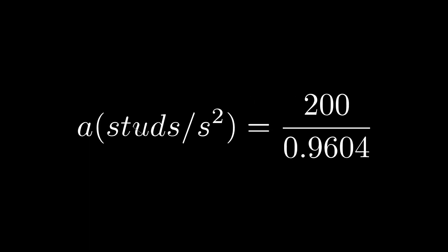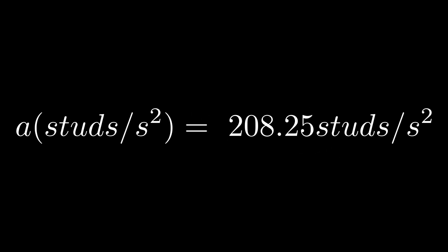With that time, I used the acceleration formula to calculate the studs per second squared of the part falling, which gave me around 208.25 studs per second squared.